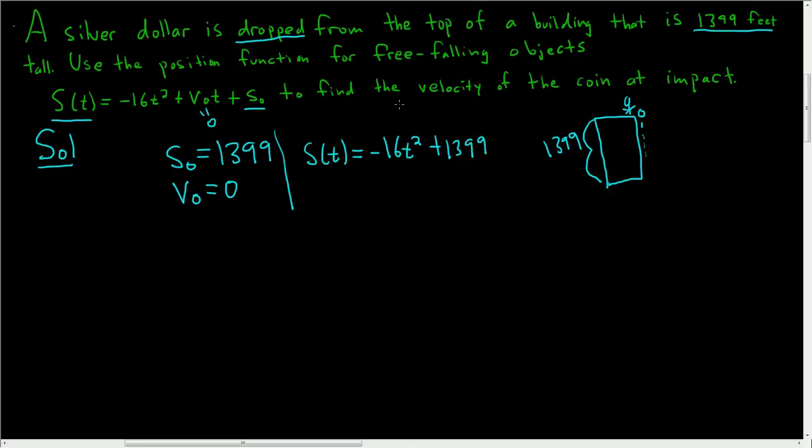Now we just have to answer the question. We have to find the velocity of the coin at impact. So in order to do that, first we have to find out when the coin hits the ground. So we'll first find t, where t is the time the coin hits the ground.